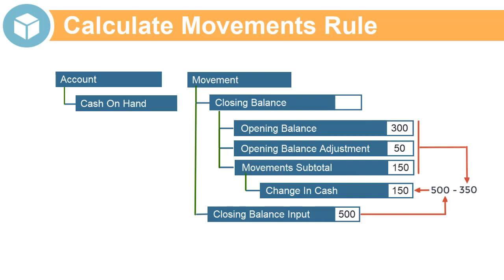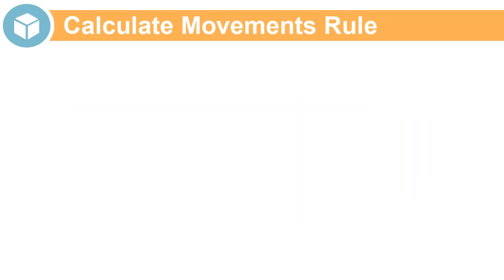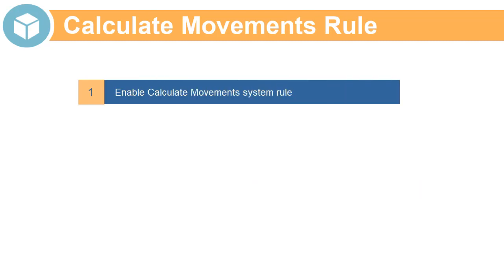After the Calculate Movements rule executes, the closing balance member is aggregated from opening balance, opening balance adjustment, and movement subtotal using the default consolidation process.